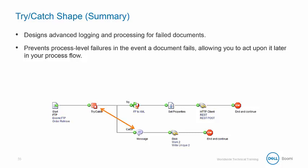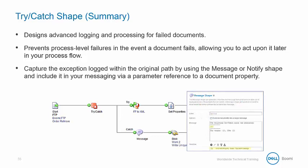It is a best practice to pair a try-catch shape with either a message shape or a notify shape to handle more detailed error reporting. Finally, you can capture the exception logged within the original path by using the message or notify shape and include it in your messaging via a parameter reference to a document property.